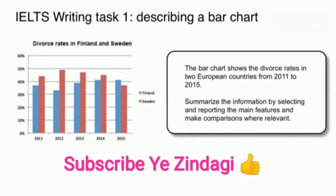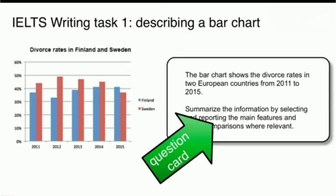I am going to provide you very detailed information so you can attempt a good task and achieve a good band. The bar chart below shows the divorce rate in two European countries from 2011 to 2015. Summarize the information by selecting and reporting the main features and make comparisons where relevant.